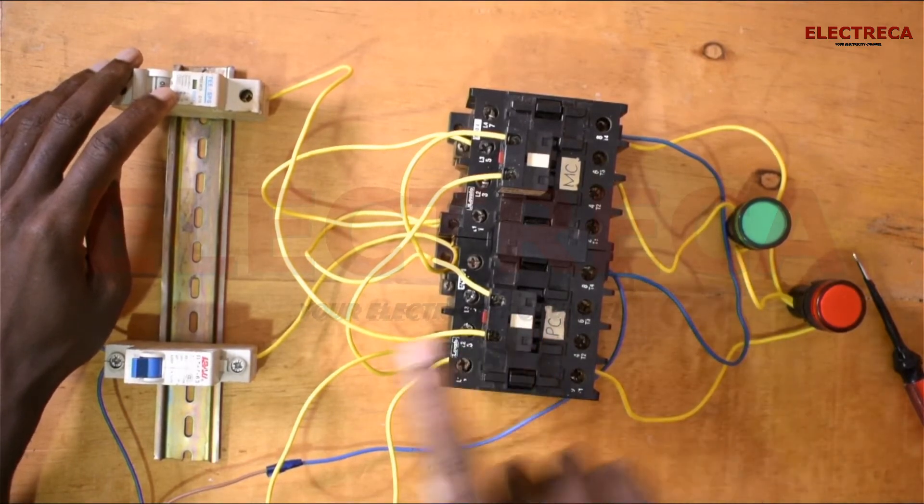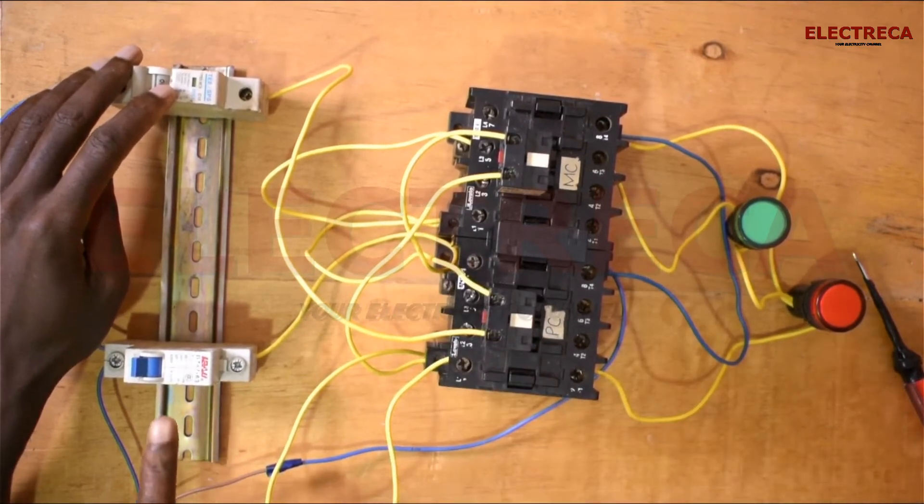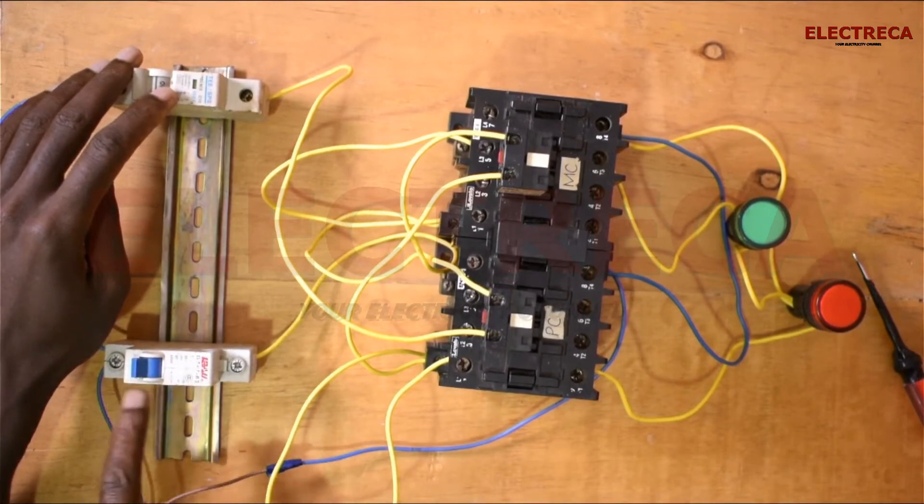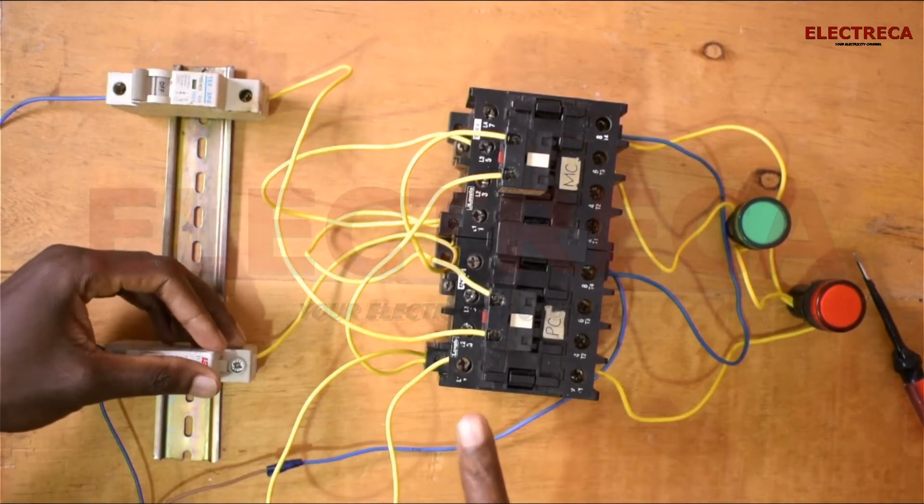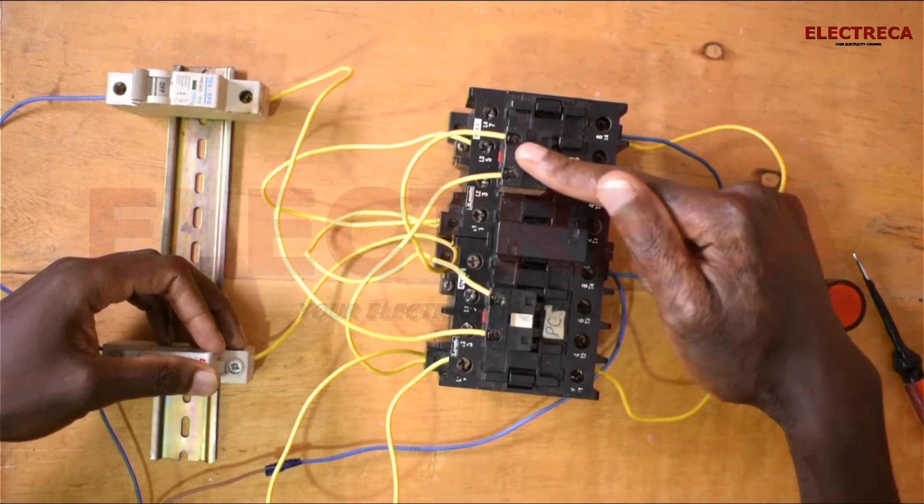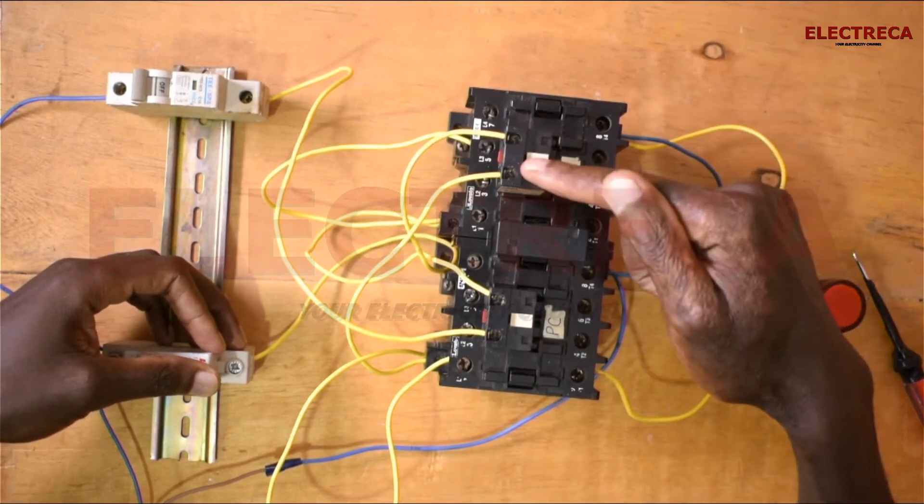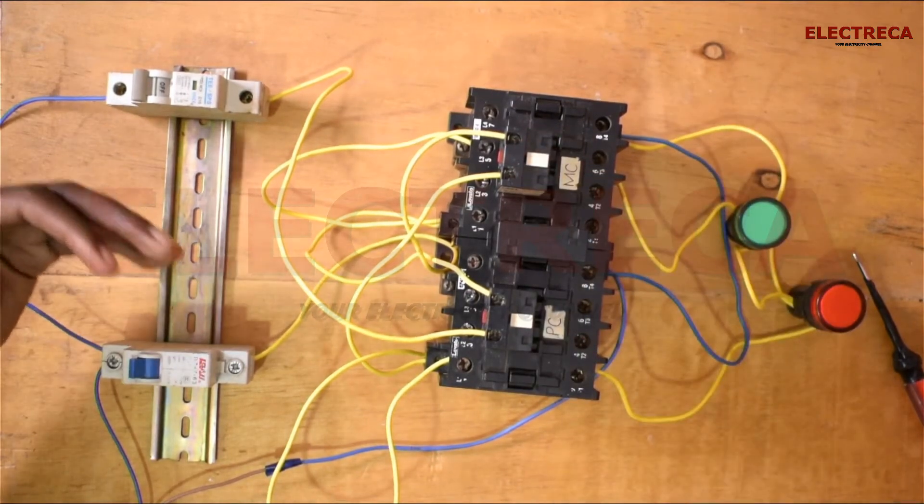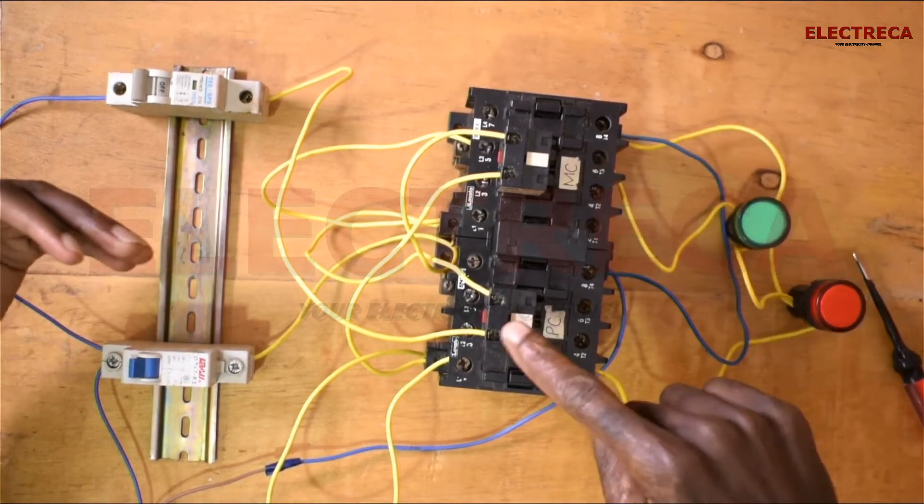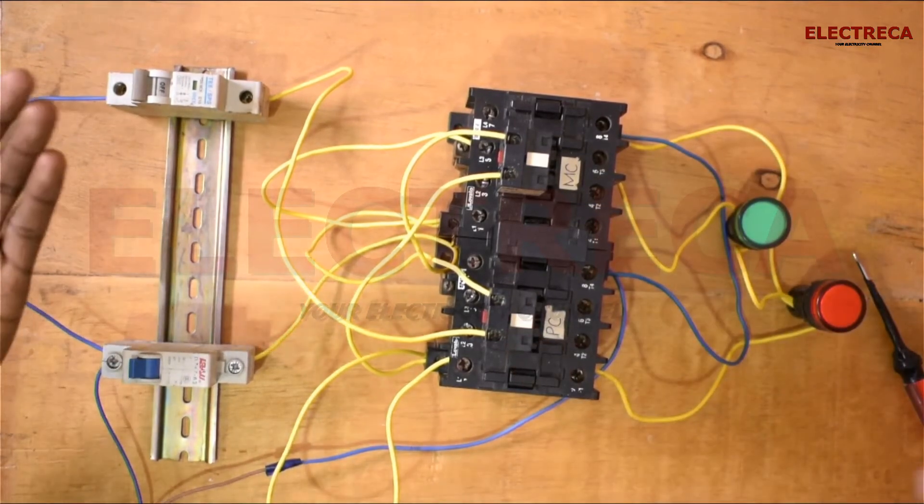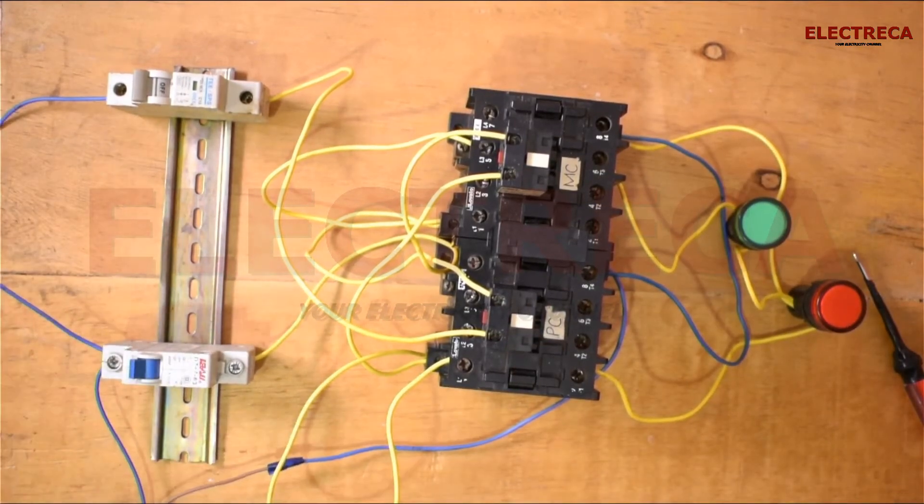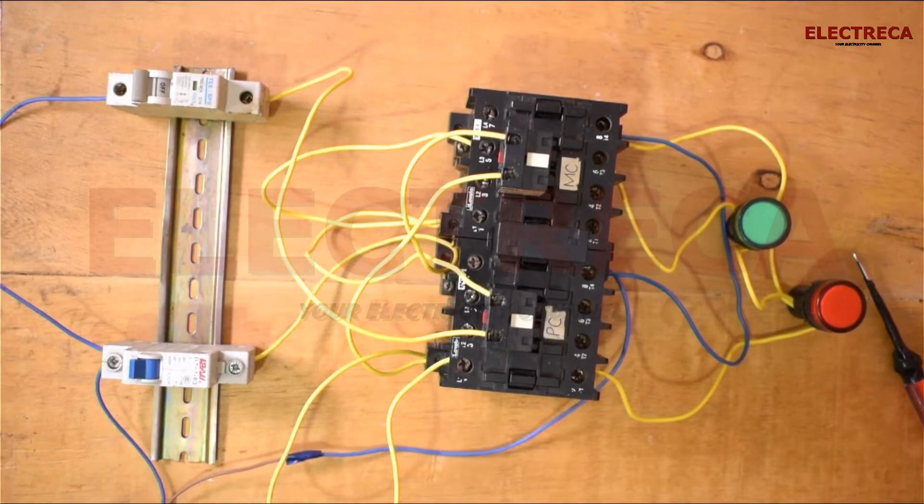Same thing with the generator contactor or the backup contactor. To energize the coil, it has to go through the main contactor, okay? Such that if one contactor is closed, this is closed, this is open, so we won't get any problem. So let's give it a test and we'll see what happens.